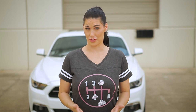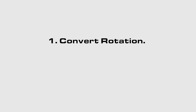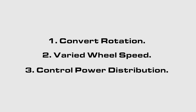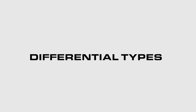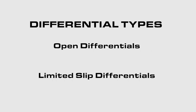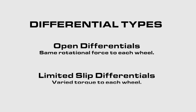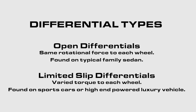Now let's talk a little more about differentials. This can be a pretty heavy topic so we're just going to go over the basics. A differential has a few basic jobs: to take the rotation of your shaft and convert it to spin the right way; to allow your wheels to spin at different speeds when turning; and to help control which wheel gets the power when needed. There are also different types of differentials — open and limited slip differentials. Open differentials provide the same rotational force to each of the wheels on the axle no matter which tire has more grip. Limited slip differentials, on the other hand, allow more torque to be delivered to the wheel with the most traction. Open differentials are more commonly found on your typical family sedan where high performance driving isn't a priority. Limited slip differentials are more commonly found on sports cars or high powered luxury vehicles where handling and performance are a higher priority.